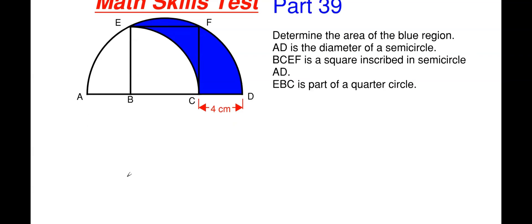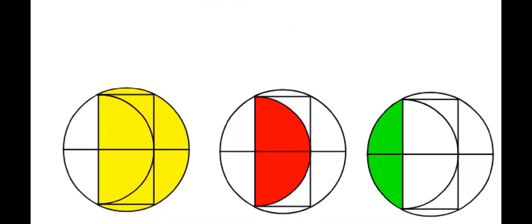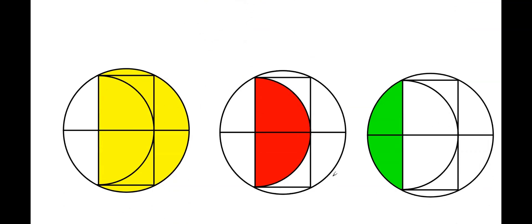What I'm going to do is expand out and complete the entire circle of AD, then complete the quarter circle into a semicircle from E, B, C, and make the square into a full rectangle. So our blue area is right in through here. Two times our blue area, since we've expanded and doubled up, is going to be equal to the yellow area shown on the left portion.